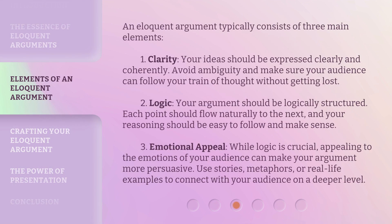An eloquent argument typically consists of three main elements. One, clarity — your ideas should be expressed clearly and coherently. Avoid ambiguity and make sure your audience can follow your train of thought without getting lost. Two, logic — your argument should be logically structured, with each point flowing naturally to the next, and your reasoning easy to follow and make sense. Three, emotional appeal — while logic is crucial, appealing to the emotions of your audience can make your argument more persuasive. Use stories, metaphors, or real-life examples to connect with your audience on a deeper level.